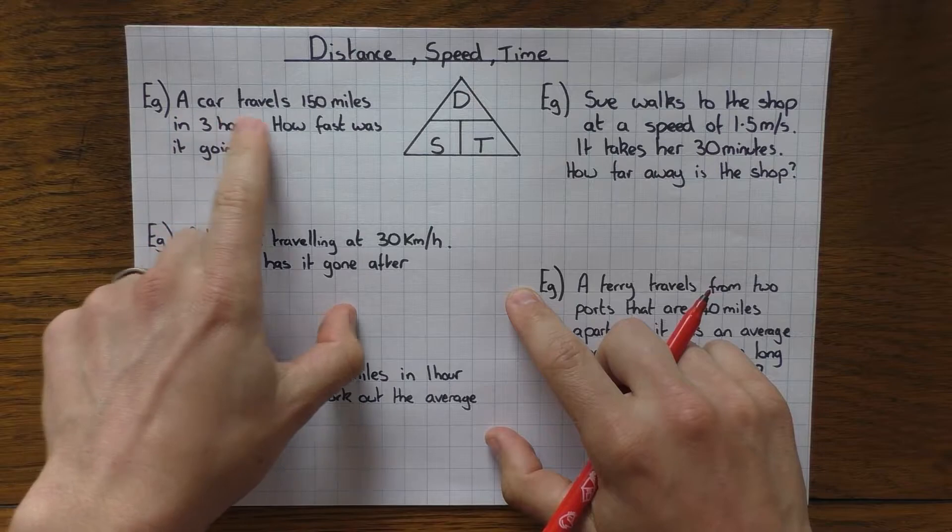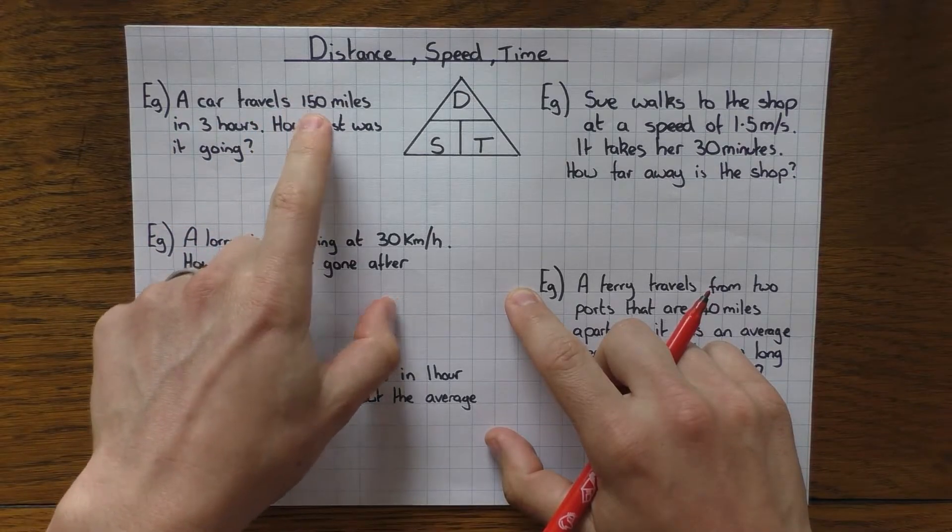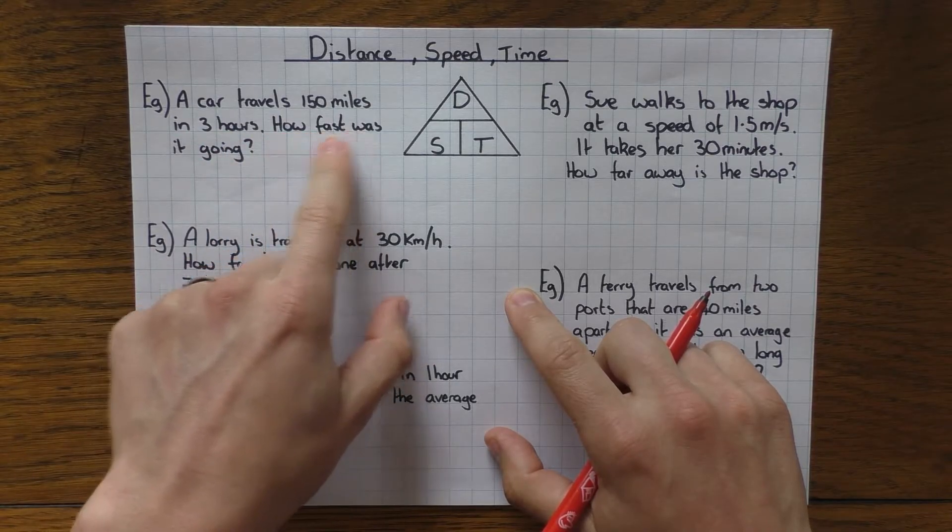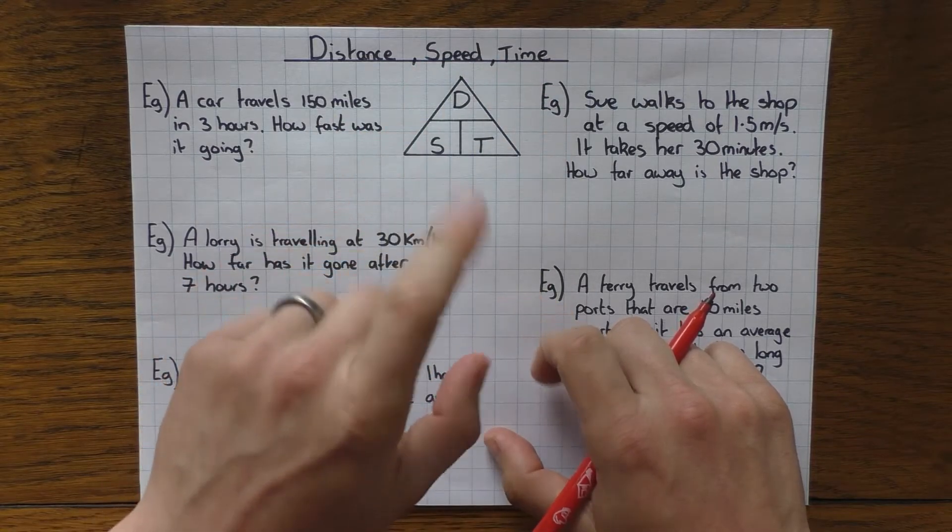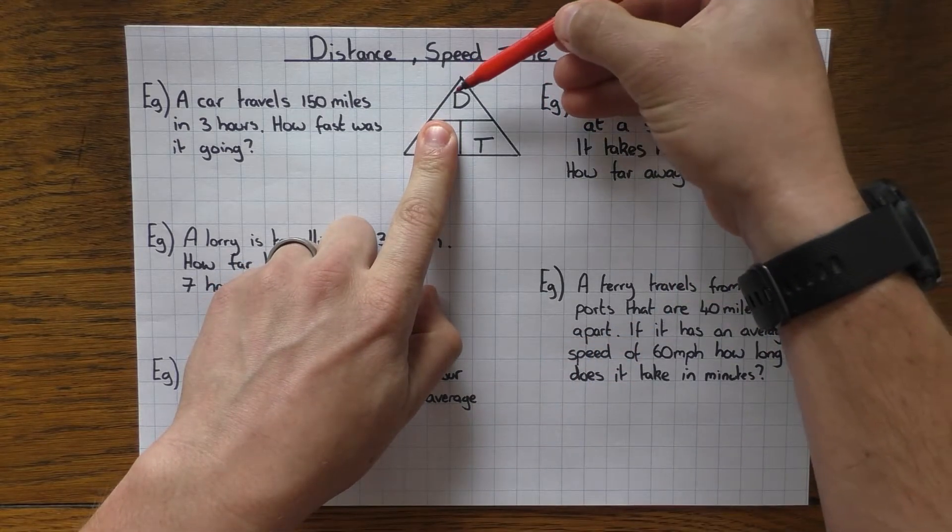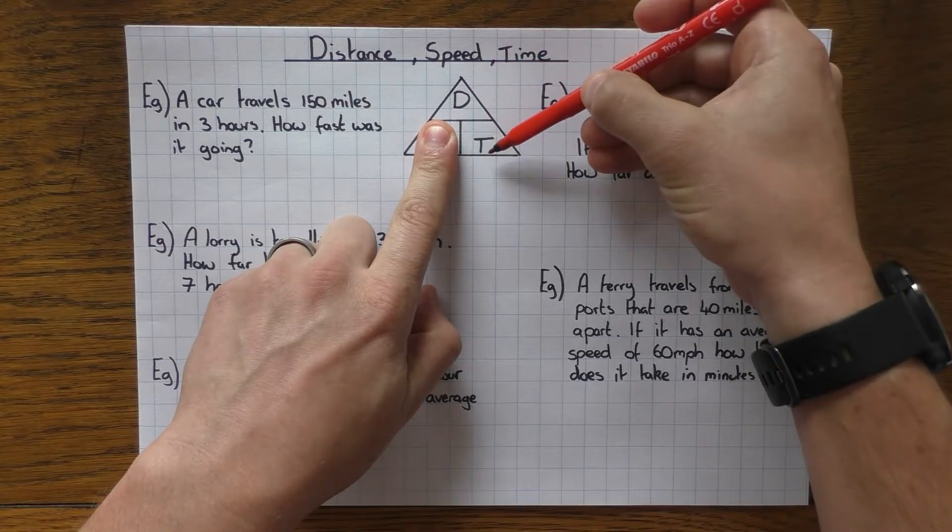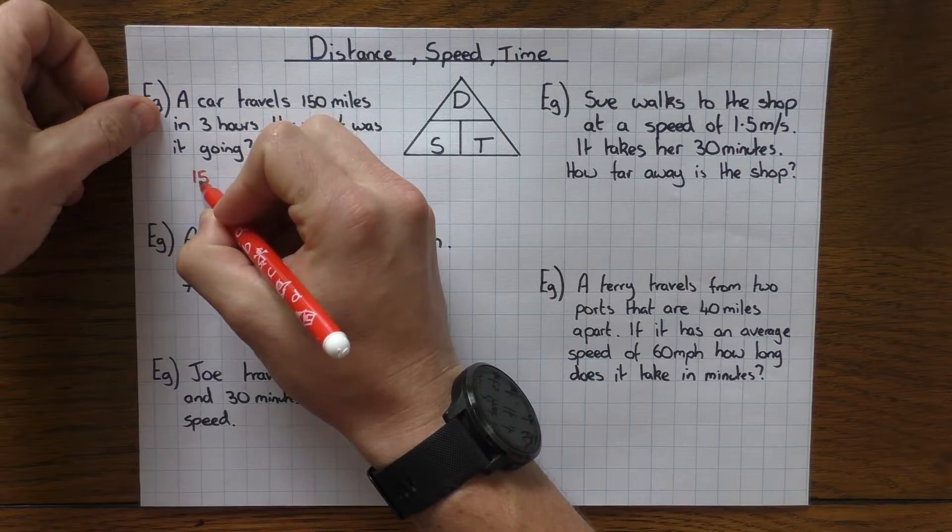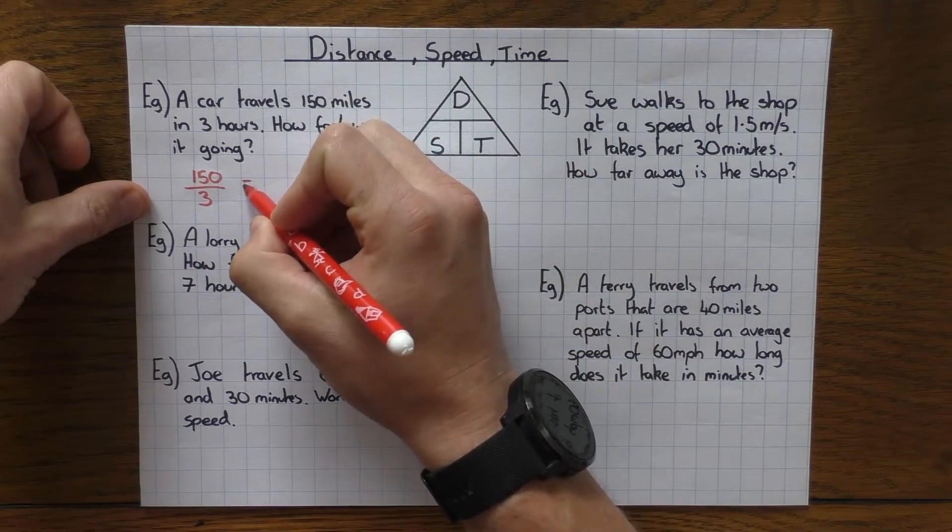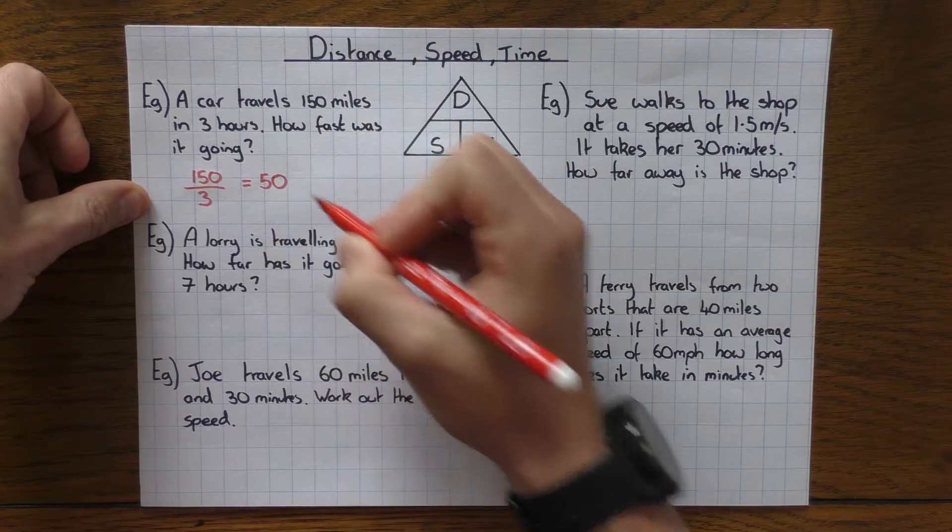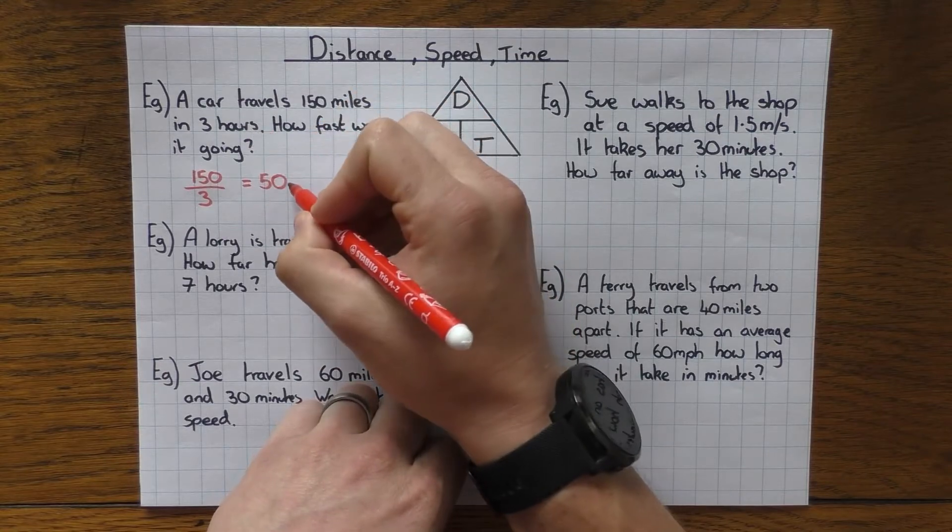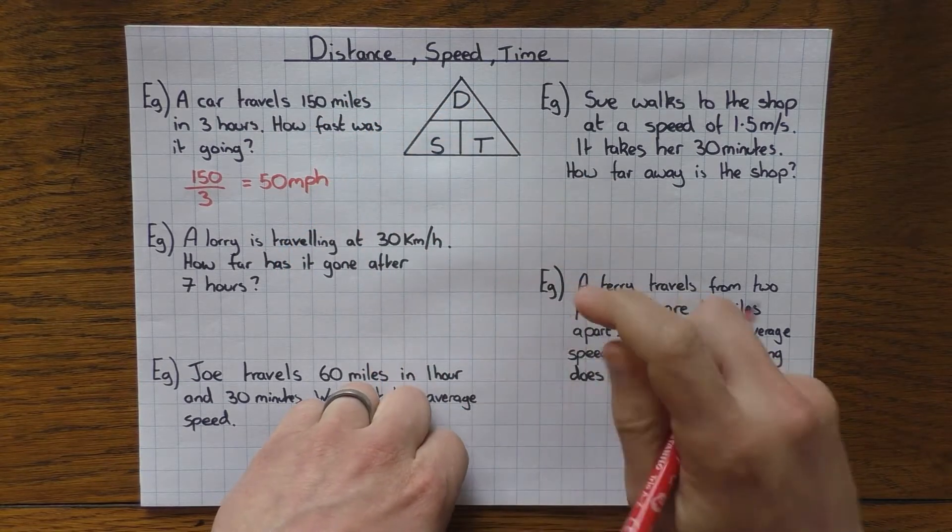Okay so first one, a car travels 150 miles, so that's the distance, in three hours that's the time, how fast is it going. So if it's after how fast it was going, that's the speed. So we come to our triangle here and you cover up what you want. So if I want the speed, I cover up the S for speed and I then therefore need to do the distance divided by the time. So the distance was 150 divided by the time which is three and 150 divided by three is 50. And then don't forget your units. Well the distance was in miles and the time was in hours so it's miles per hour. Simple as that.